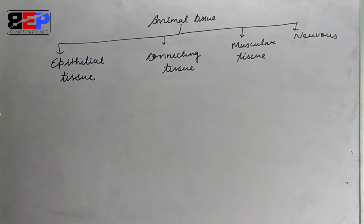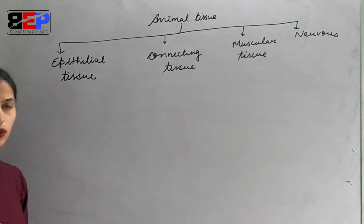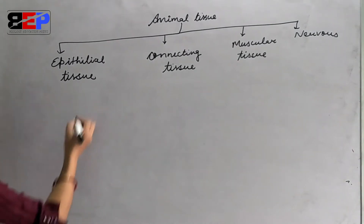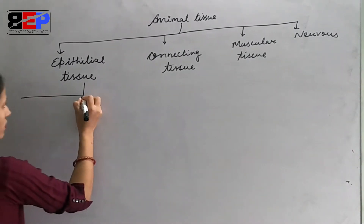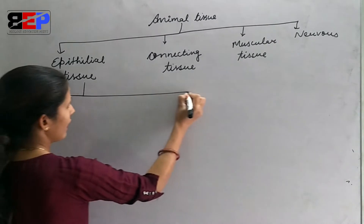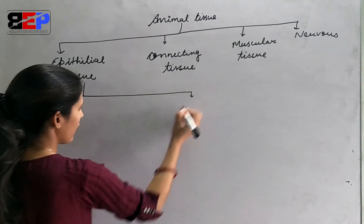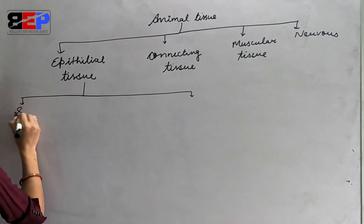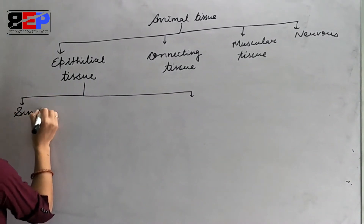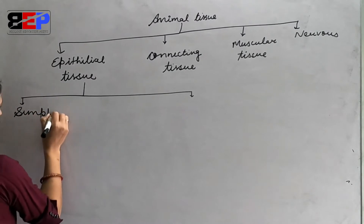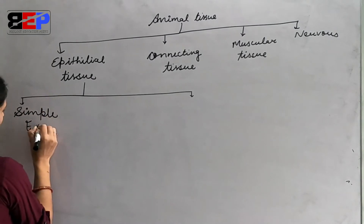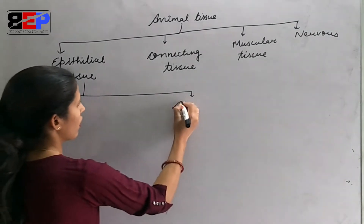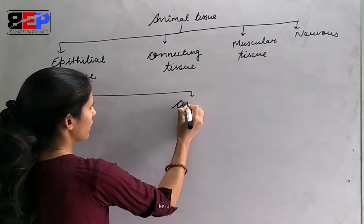First of all, we will discuss epithelial tissue. Epithelial tissue, on the basis of layers — how many layers of cells are present — is of two types: simple epithelial tissue and compound epithelial tissue.